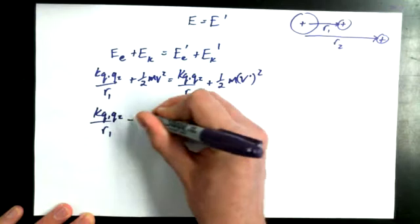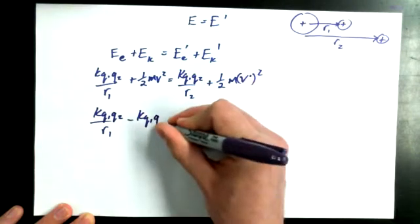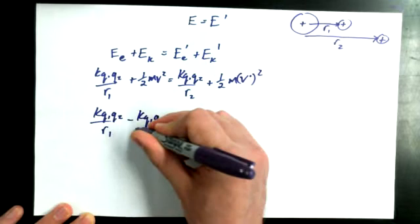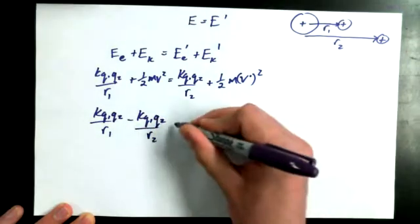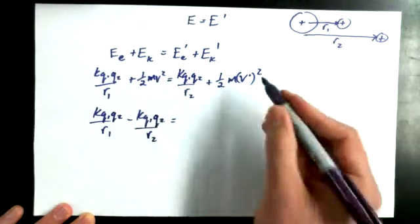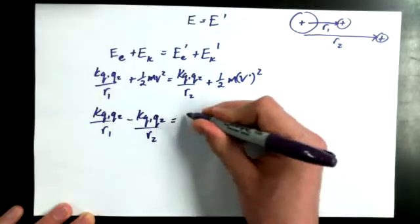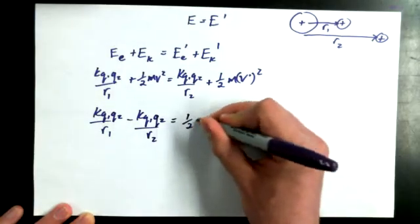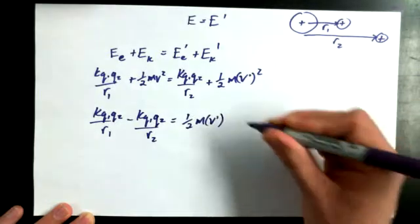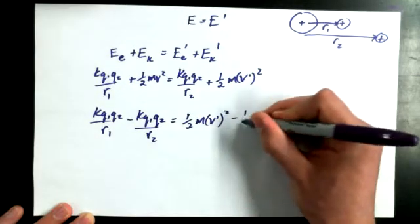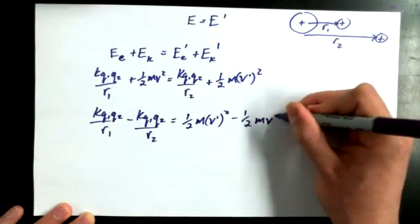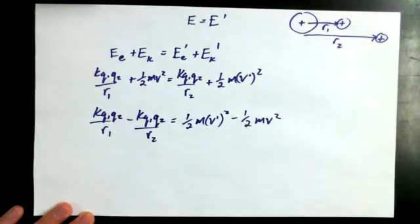Now, if I get the electric potential energies onto the same side, what I could say is I've got kq1q2 over r1 minus kq1q2 over r2 equals, and I take the kinetic energies over to the same side, one-half mv primed, which is really the final velocity squared, minus one-half mv squared, which is really the initial velocity squared.